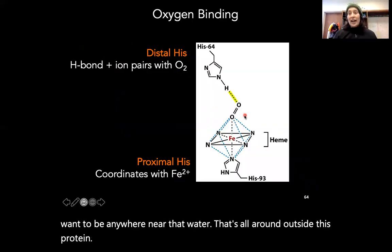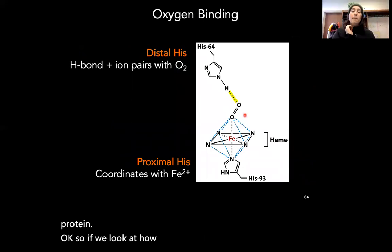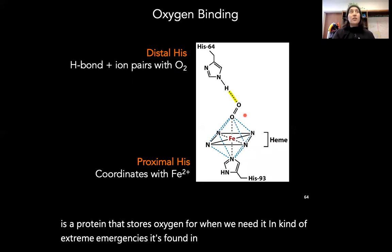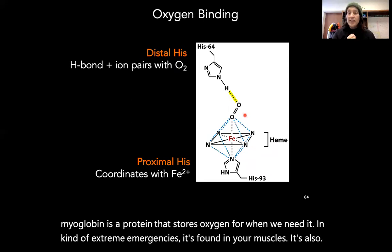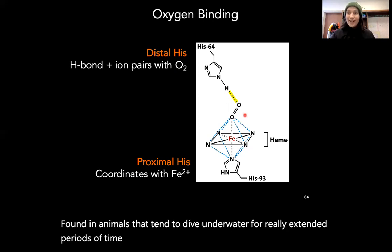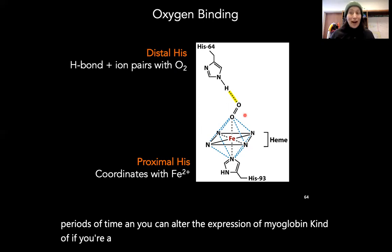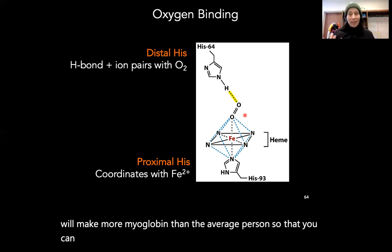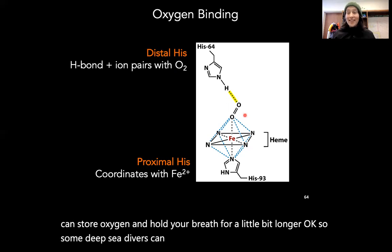Myoglobin is a protein that stores oxygen for when we need it in extreme emergencies. It's found in your muscles and also in animals that tend to dive underwater for extended periods. You can even alter the expression of myoglobin — if you're a deep-sea diver and practice long enough, your body will make more myoglobin so you can store oxygen and hold your breath a bit longer. Some deep-sea divers can hold their breath for five or six minutes.